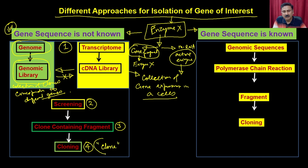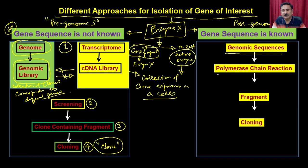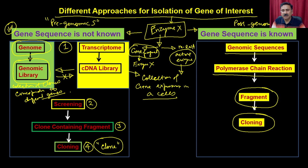This approach applies to the pre-genomic era, when the genomic sequence was not known. People had isolated an enzyme using a traditional approach but did not know the gene sequence, so they went with these library-based approaches. In the post-genomic era, when genomic sequences are known, you can use polymerase chain reaction to get the amplified gene product, clone it into a suitable vector, and proceed to overexpression and purification.